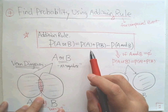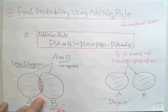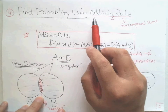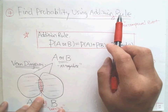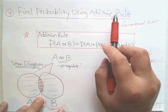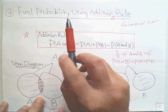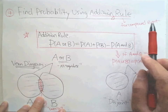Hello, this is Paul from Forsyth Tech. In this lecture, I'm going to introduce the addition rule, which is an important rule to find the probability for complicated events, for compound events.